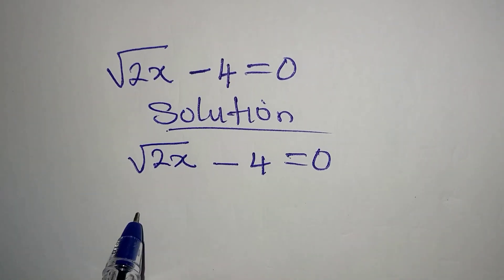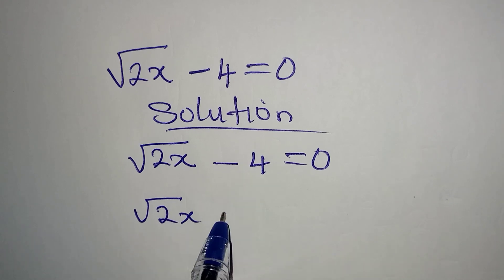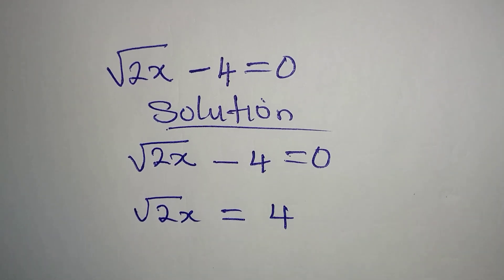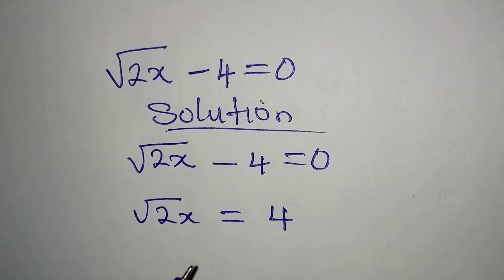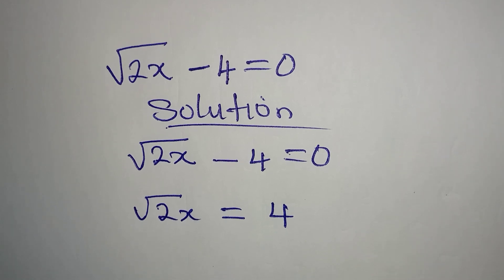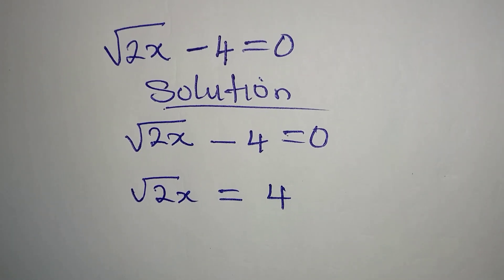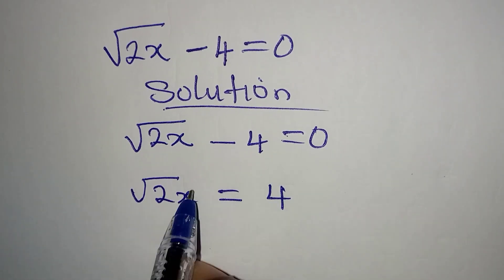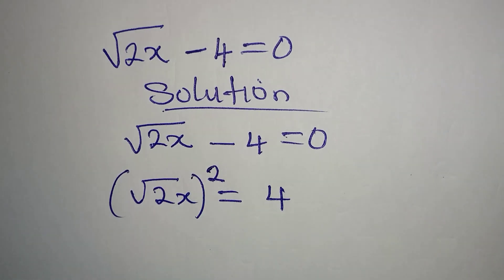What would be the first step? Square root of 2x equal to 4. We have to take this to the other side. The next step is to square both sides. We are doing that so that this can go with this.